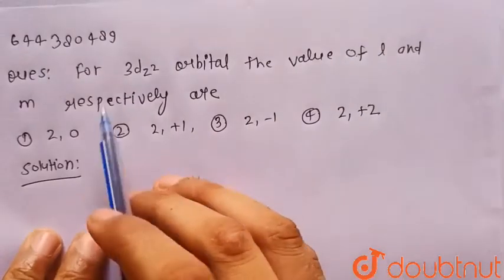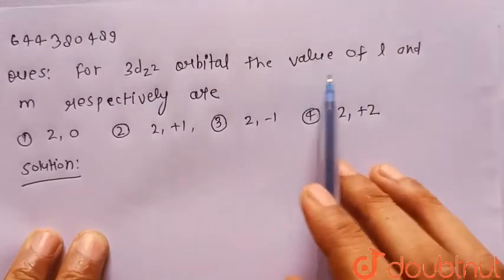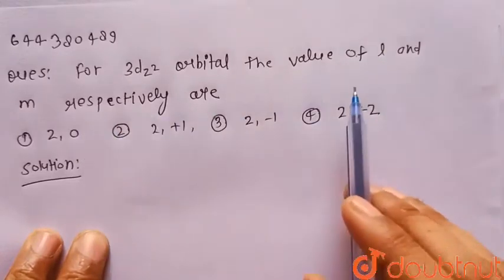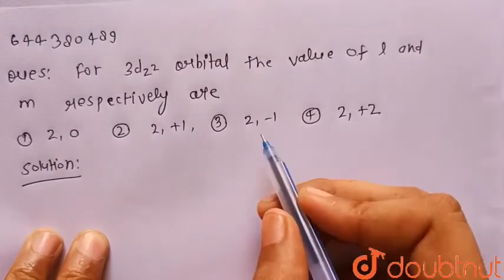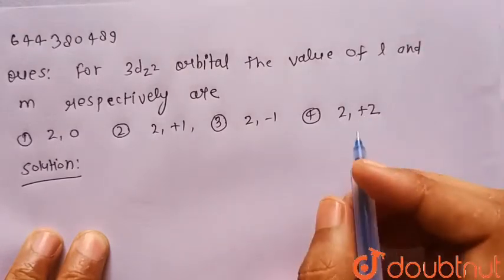Hello everyone, consider the given question. For 3dz² orbital the value of L and M respectively are. So the four options are given. First one is 2,0, second is 2,+1, third is 2,-1 and fourth is 2,+2.